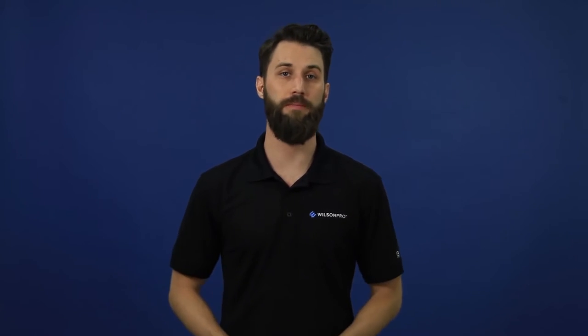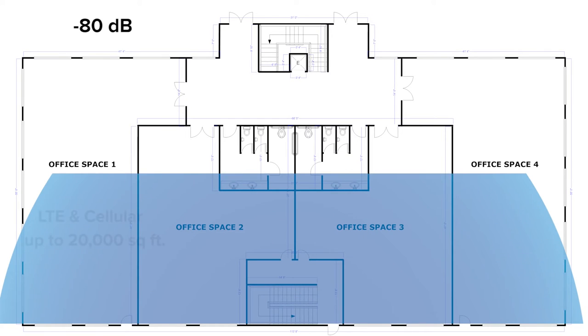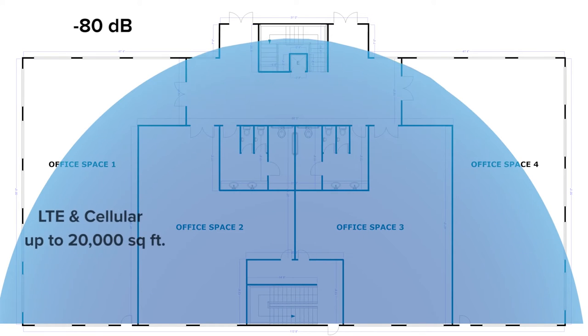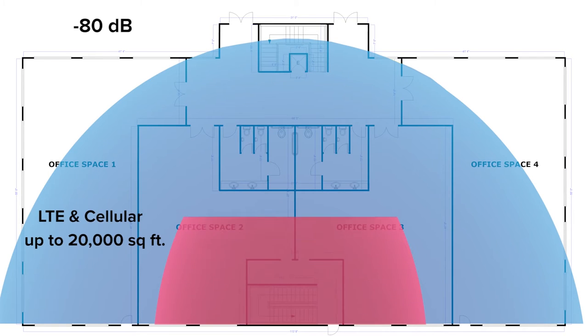Higher frequency ranges are weaker than lower frequency ranges — the higher you get, the weaker the signal. For example, an incoming signal of -80 dB could provide enough coverage for up to 20,000 square feet on the LTE and cellular bands, but only up to 8,000 square feet on the AWS and PCS bands.